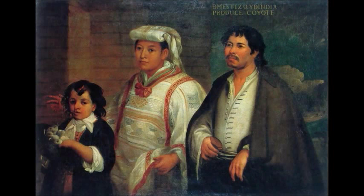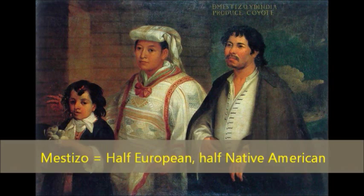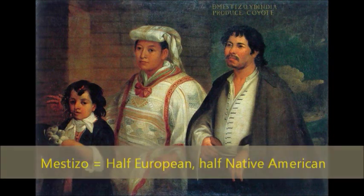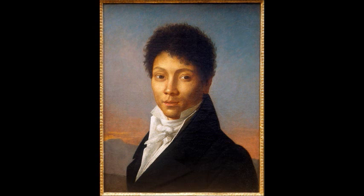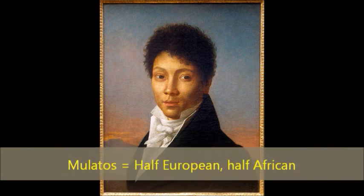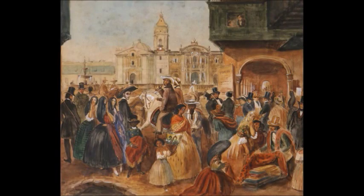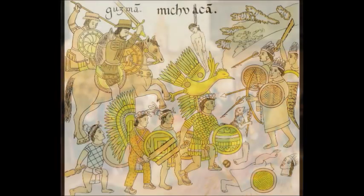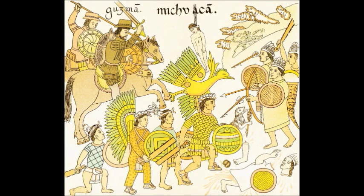Below the Peninsulares and Creoles were the Mestizos, people who were of half European and half Native American descent. Another group of mixed race were the Mulatos, people of half European and half African ancestry. The African slaves and Native Americans found themselves at the very bottom of society, with the Native Americans actually being treated worse than the African slaves. The difference was that the African slaves had economic value to the Europeans, whereas the Native Americans did not.